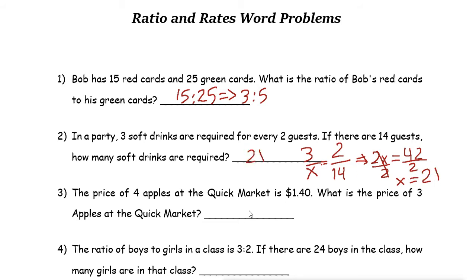Let's take a look at the next example. The price of four apples at the quick market is $1.40. What is the price of three apples at the quick market? So for four apples you need to pay $1.40. Now if you need three apples how much is it? Just write the proportion and solve it.